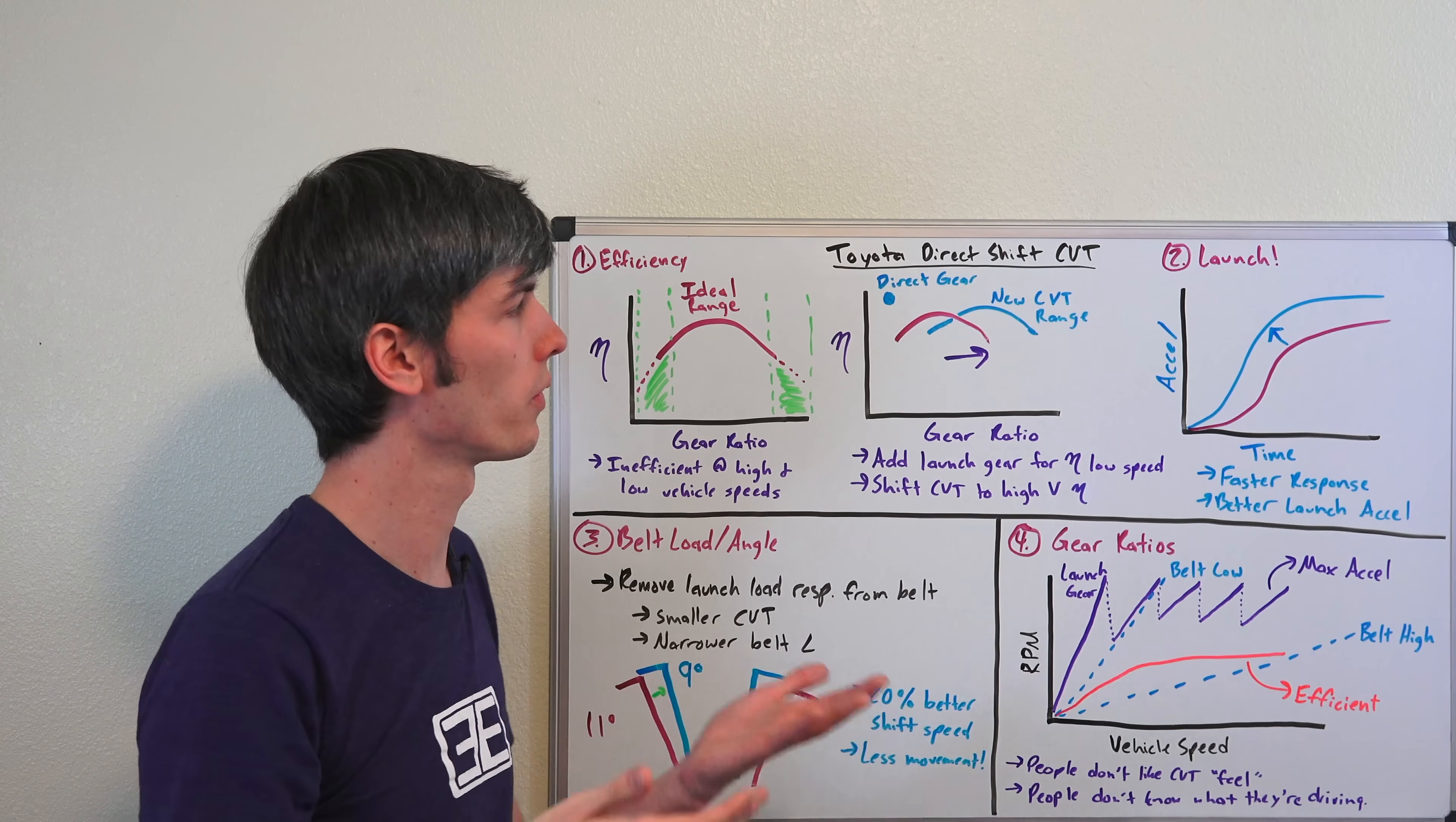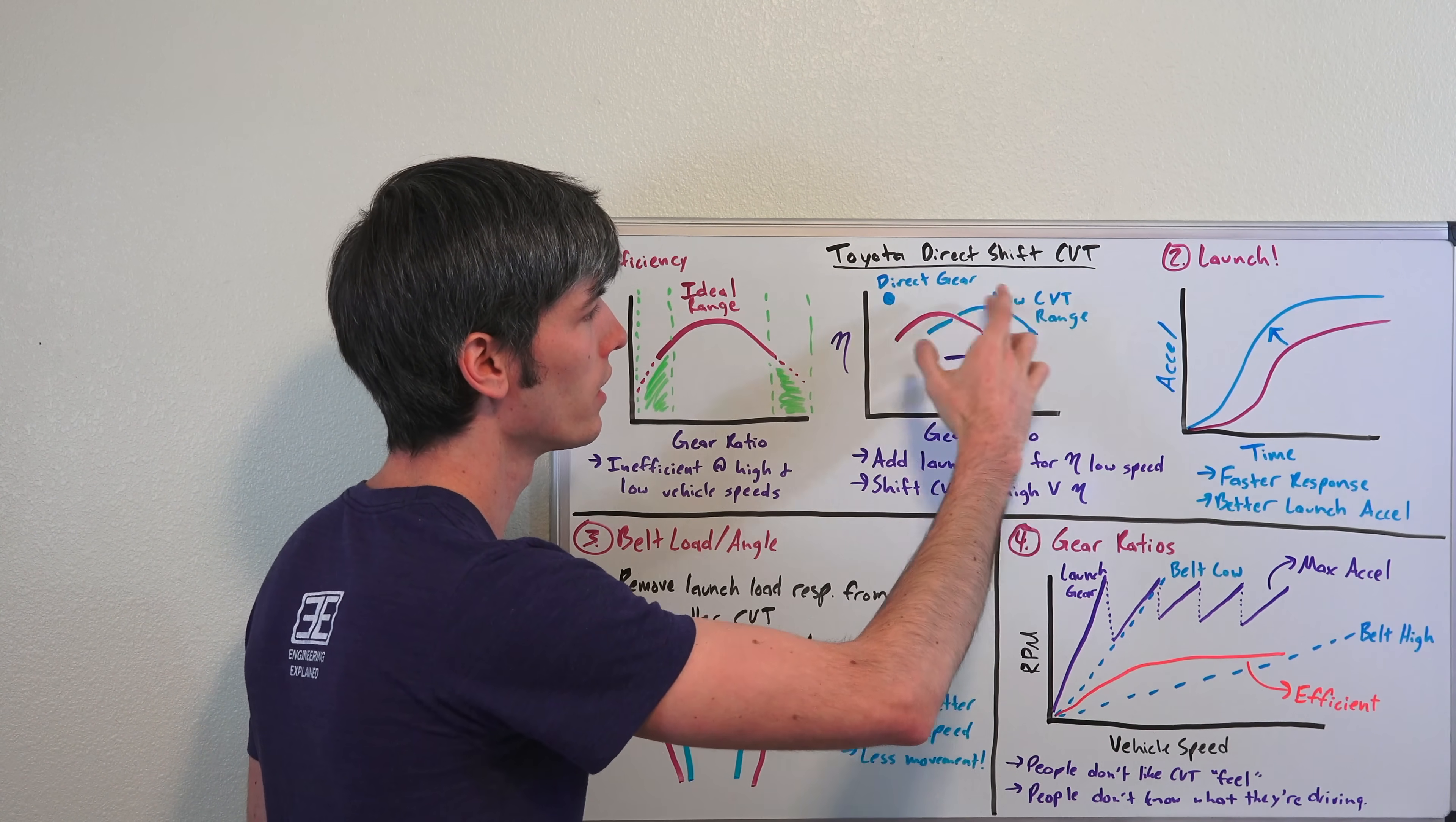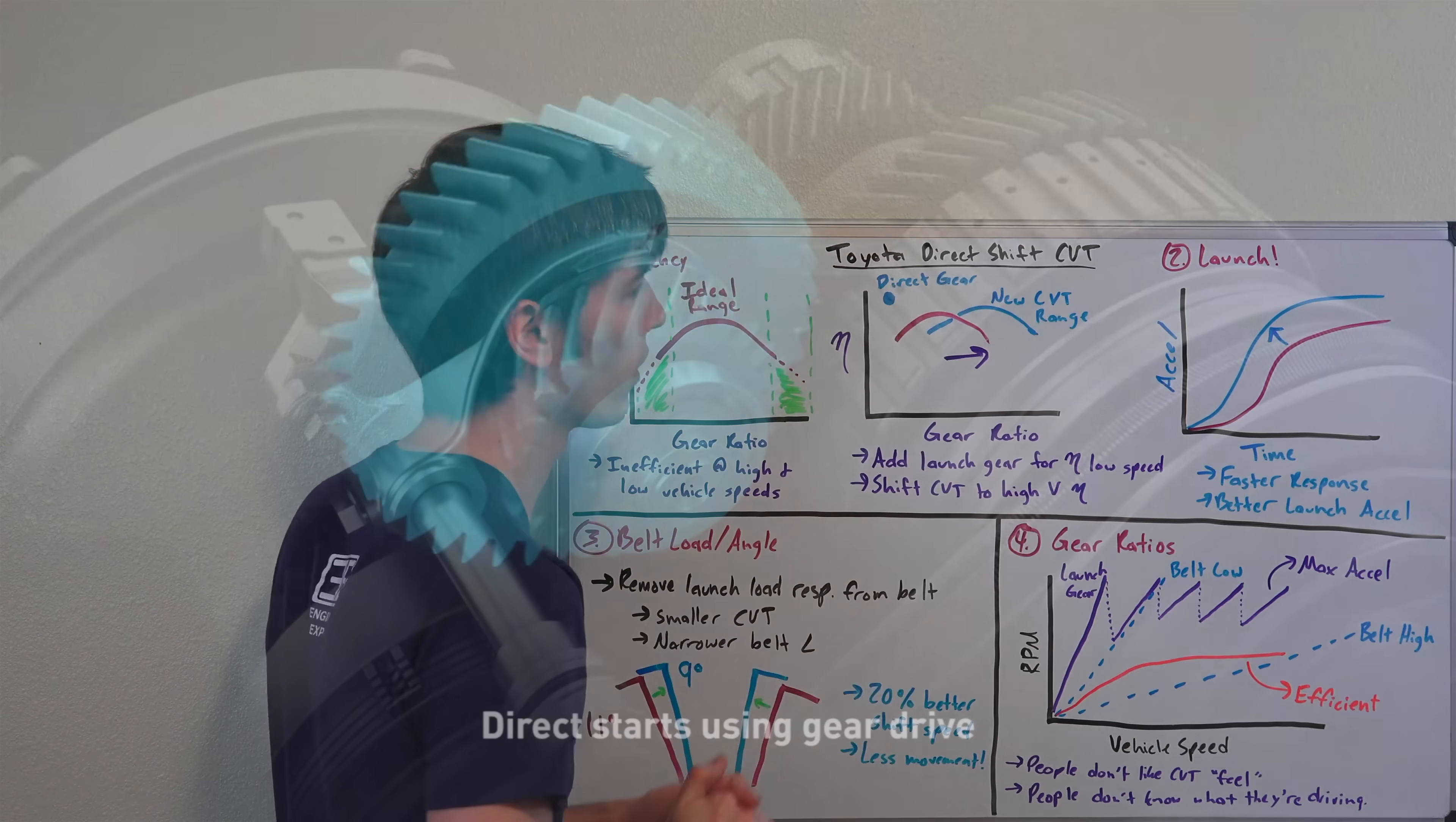And a direct gear is of course a very efficient way of transmitting power, because there's not losses that are associated like going through a belt, so a very efficient method for low speed range. And then switching over when you're driving normal driving conditions at those higher vehicle speeds, you're now operating in a more efficient range, whereas before you had to sacrifice kind of somewhere in the middle in order to be efficient at either end.